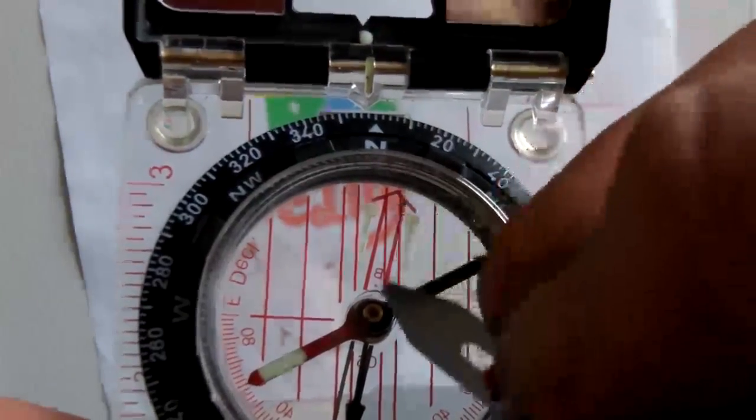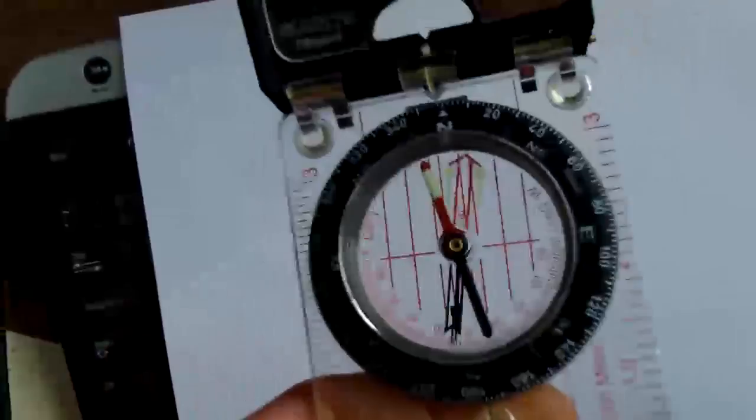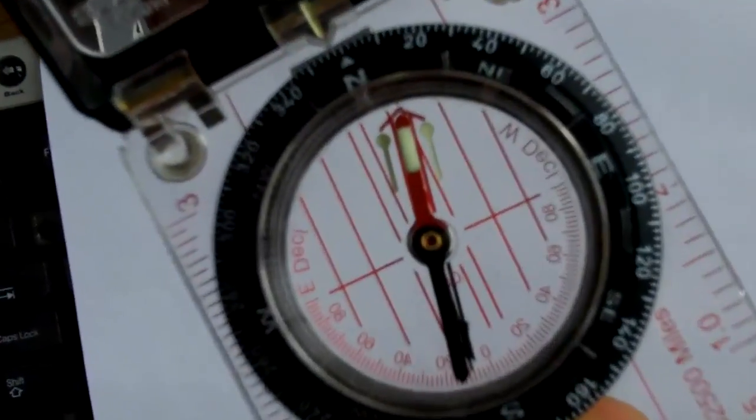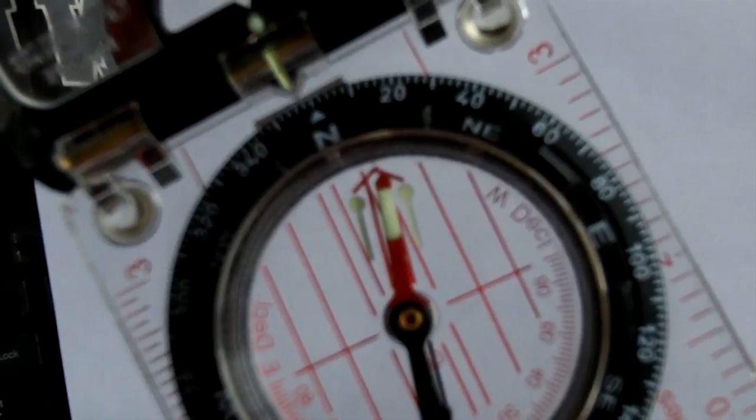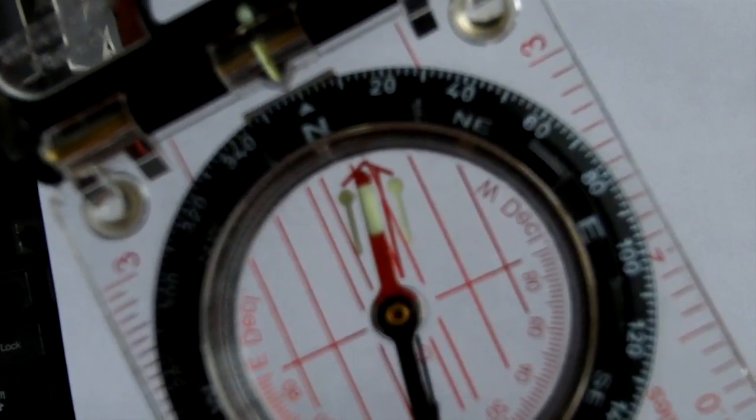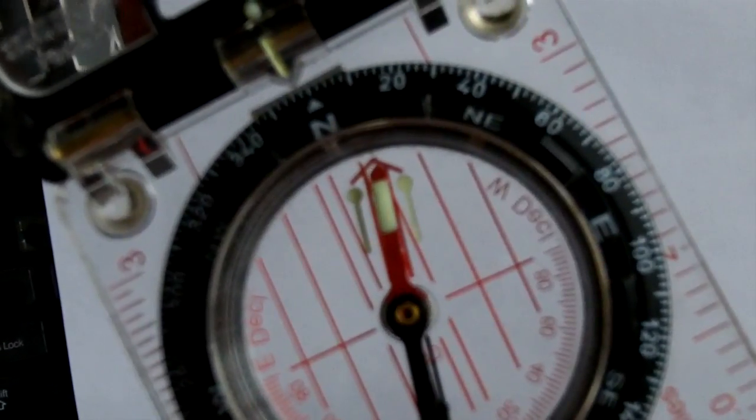Now when we line up north on the dial with the magnetic north indicator, we can turn the compass so the north seeking arrow is directly over the orienteering arrow, and what we read as north is now true north, not magnetic north off to the right. Job well done. Good work boys!